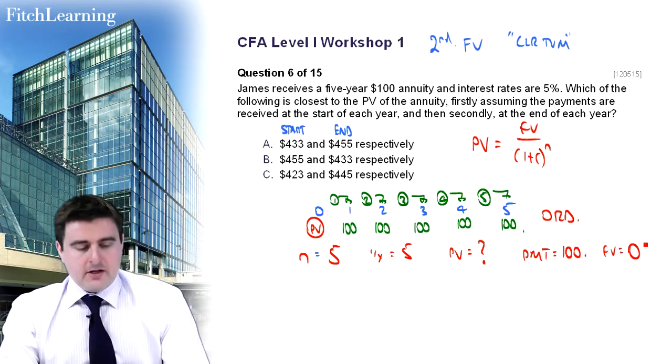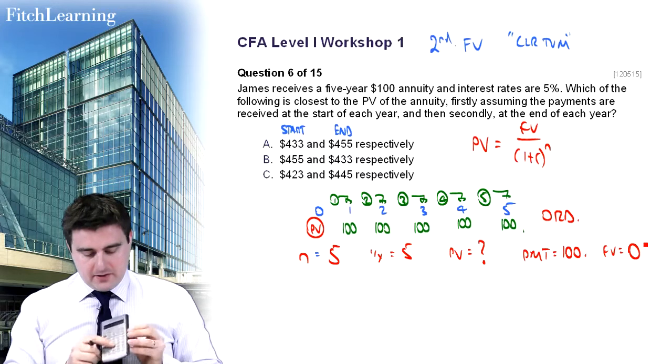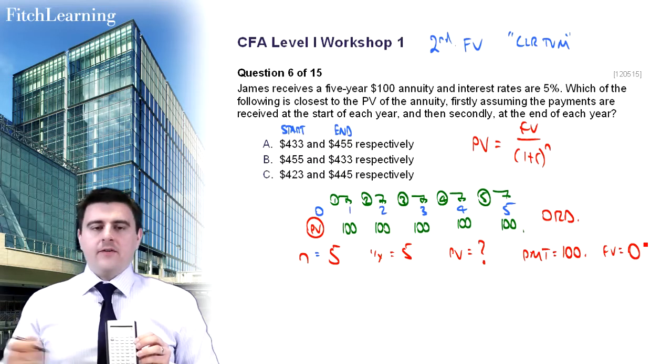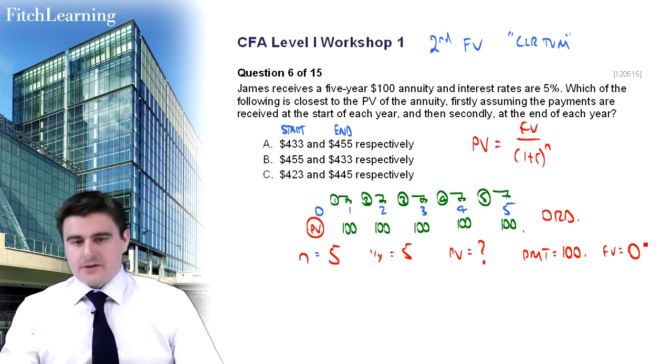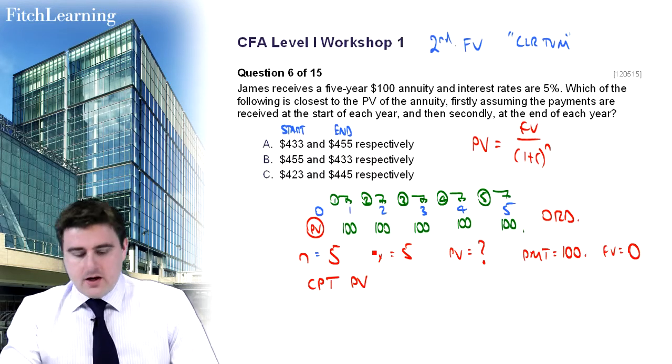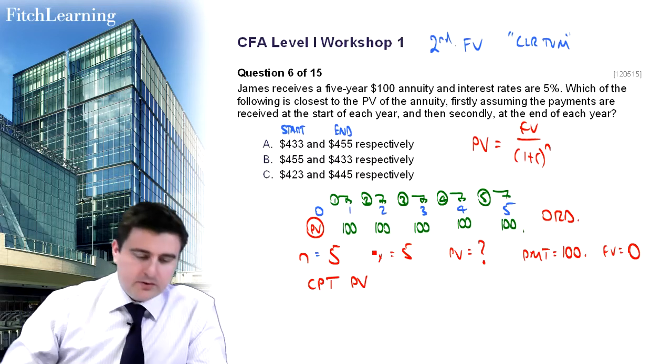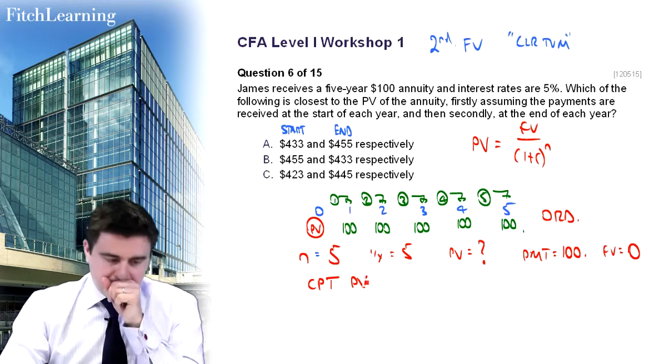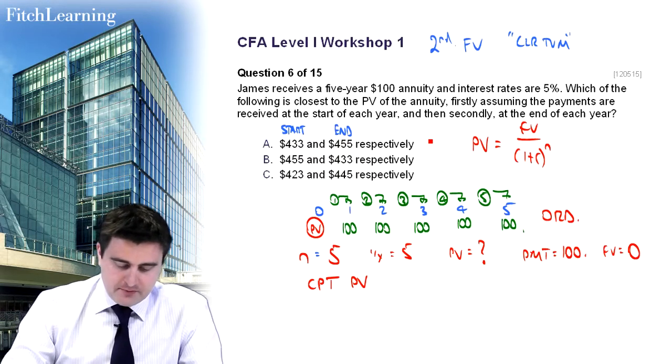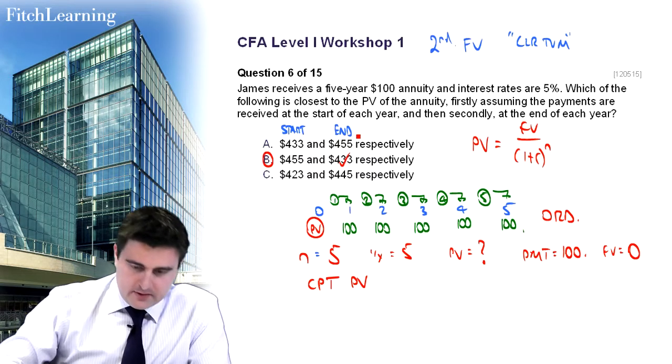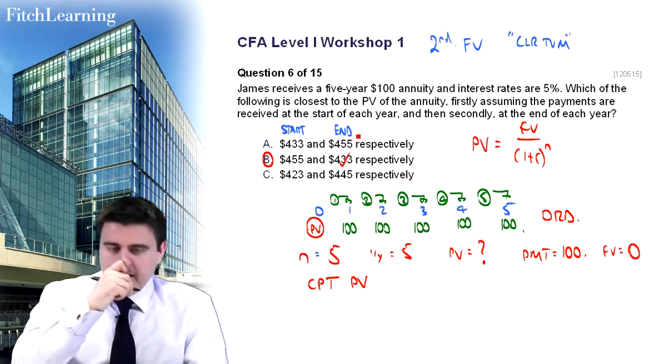Now what we do is we press the number first. So we press five, and then we'd press N, and it would say N equals five. We now know that five has been stored as N. So remember the number first, then assign the button to it. So five, and then N, five, IY, 100 is the payment, zero, future value, and then ask it to CPT, compute, top left hand corner of the calculator. PV, computing PV. You'll find that when we do this under the assumption of being at the end of the period, we would have answer B, which is 433.